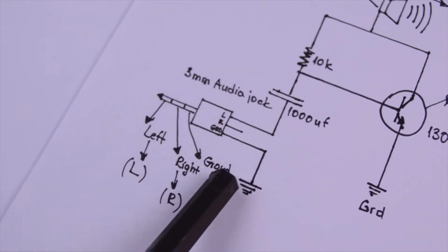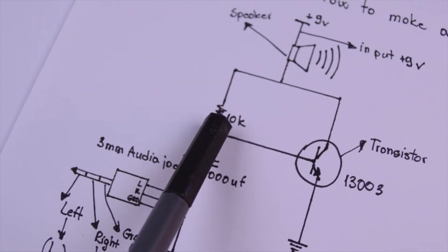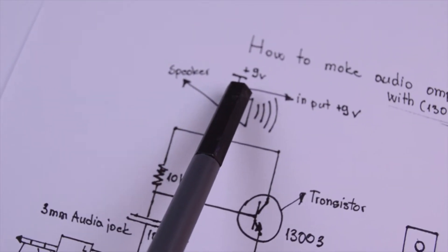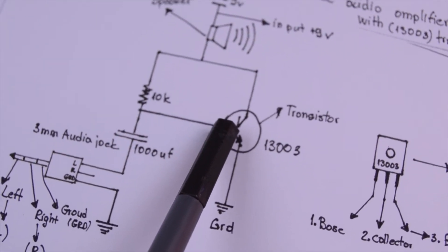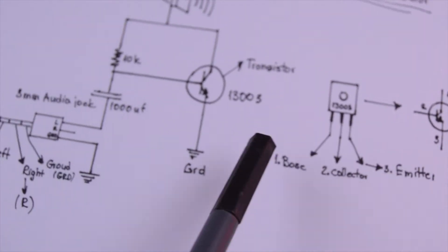This is the audio jack, connects to the capacitor, then to the resistor, goes to the speaker and then to the transistor pin. So there are the pins of the transistor, those two go to the ground and for the power we need 9V.